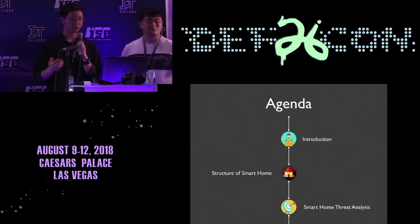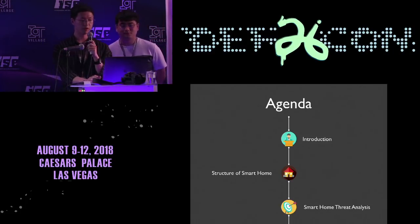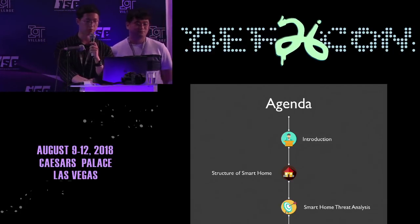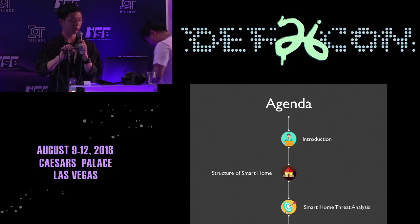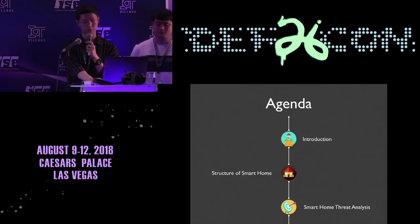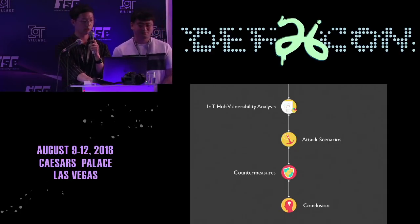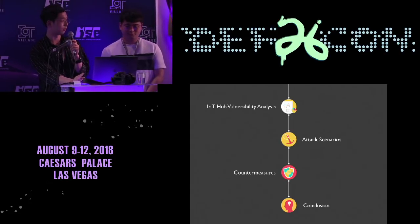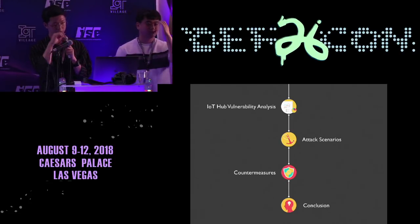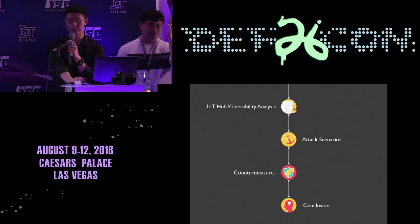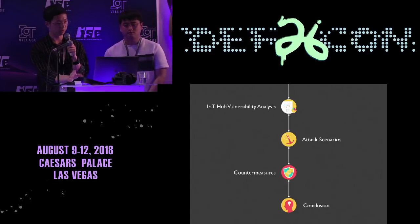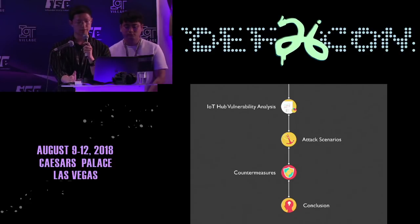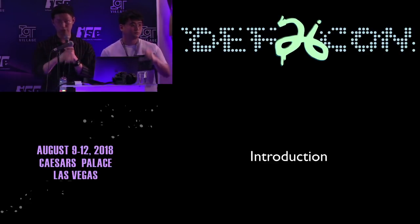We'll introduce our agenda. We'll briefly explain the structure of smart home after the introduction. Then we'll analyze real-world case studies of threats that may arise in the smart home environment. Next, we'll conduct vulnerability analysis for different IoT devices — we found 20 vulnerabilities and will describe their types. We'll suggest feasible attack scenarios, outline countermeasures to prevent these attacks, and conclude.